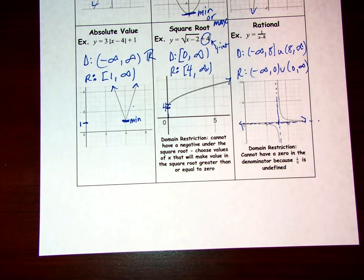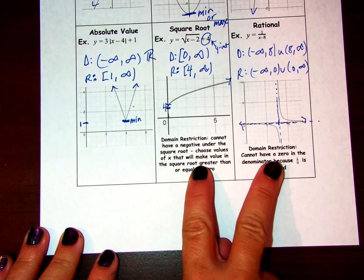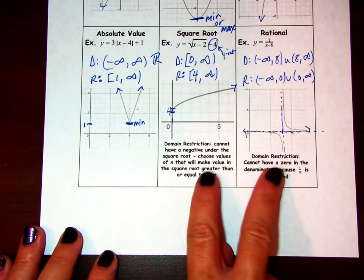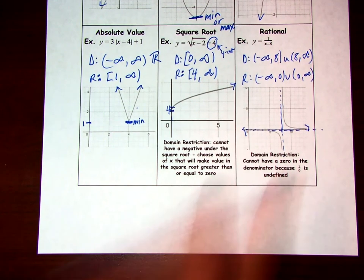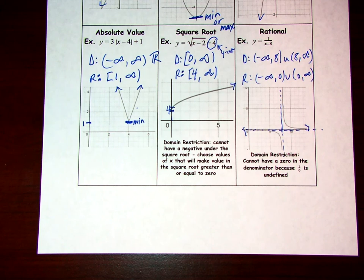That's a quick review on domain and range. Remember we can give answers in interval notation, or set notation when listing individual values like for the greatest integer function. As we become familiar with new types of graphs, we'll want to start paying attention to domain restrictions.